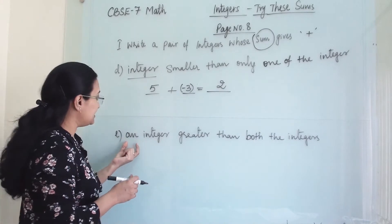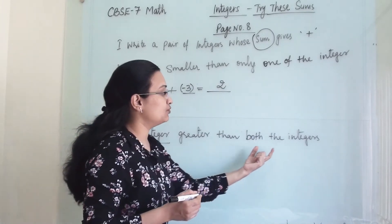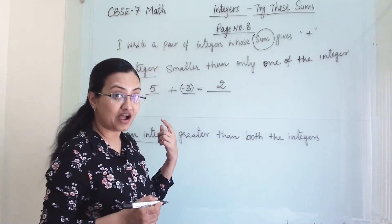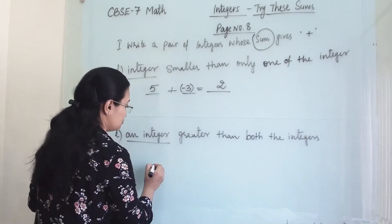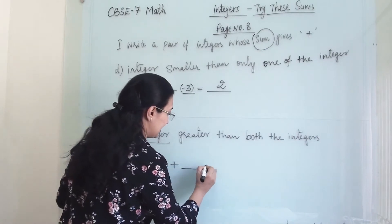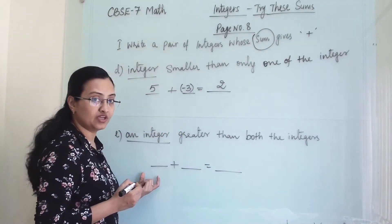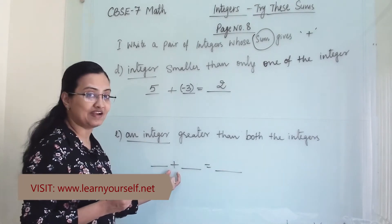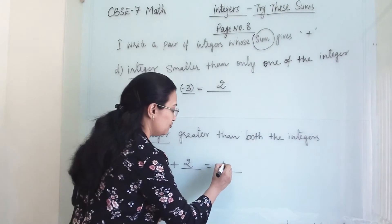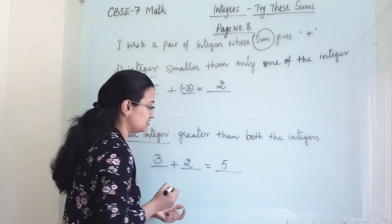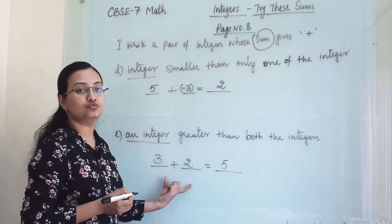Next, we need a pair of integers whose sum gives an integer greater than both the integers. We have to choose a pair such that our answer is bigger than both. This is easy — when you add any two positive numbers, the answer will always be bigger than both of those integers.